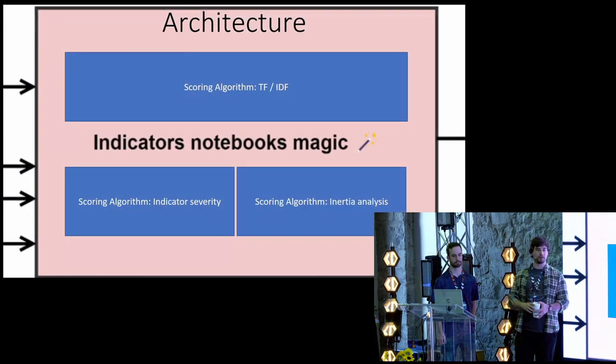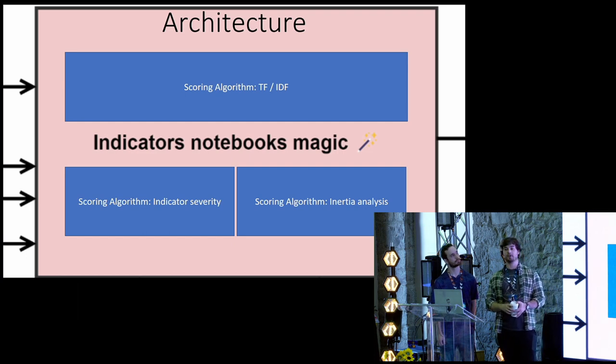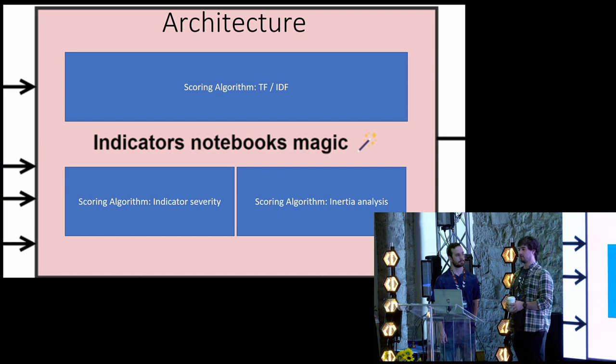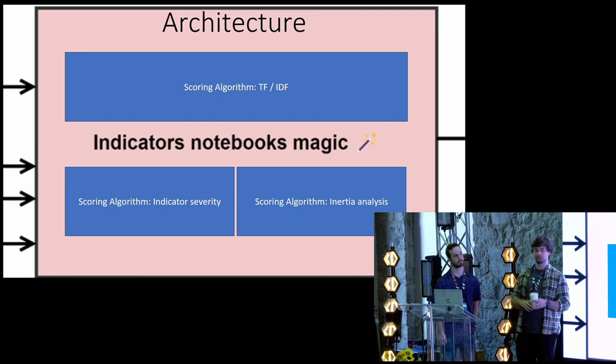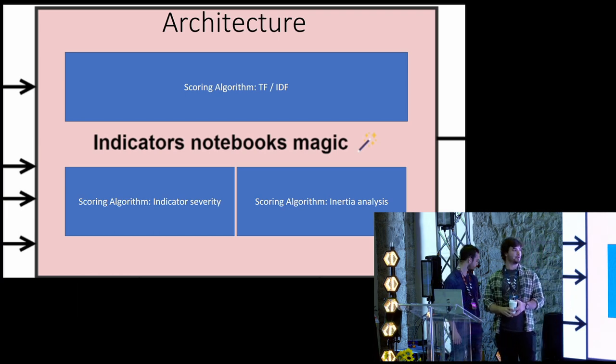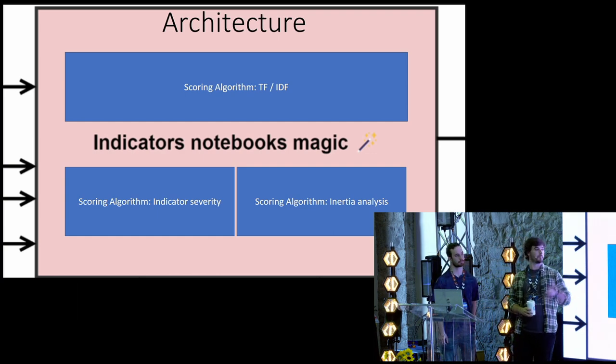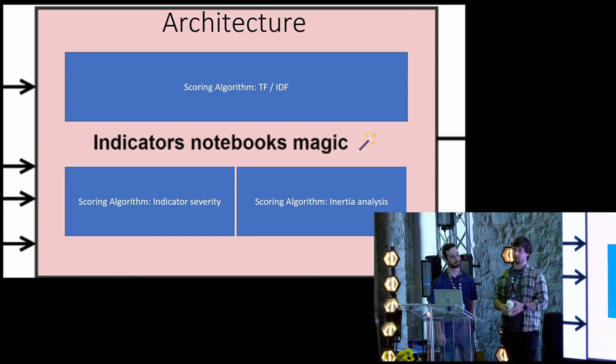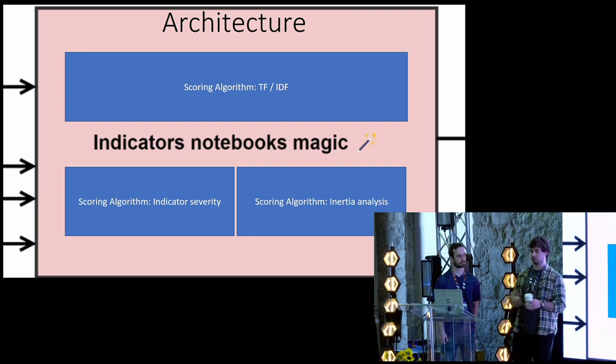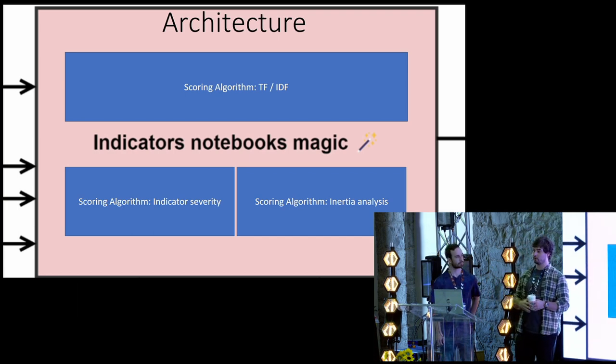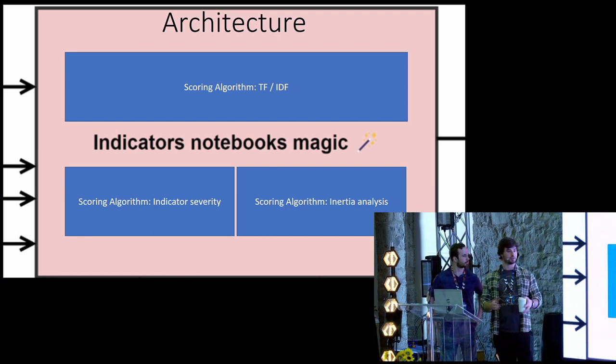So in the notebook magic, we explored three main scoring algorithms. The one we call TF-IDF, which is a frequency analysis, basically. So if there are many entities that trigger the same indicator, you get less information from the indicator. So the score is just like lessened. And if it scores on like a small subset of machine, then the score just get boosted. There are the indicator severity that we might just like security knowledge. If we say this is a critical, we give it a thousand points. And then a high, we give it a hundred points and so on. This is like the simplest score.